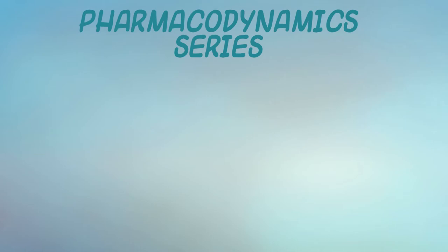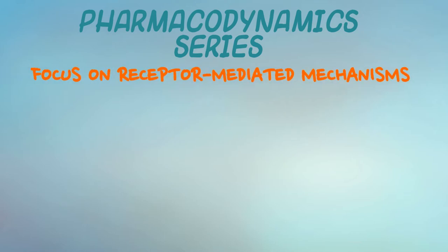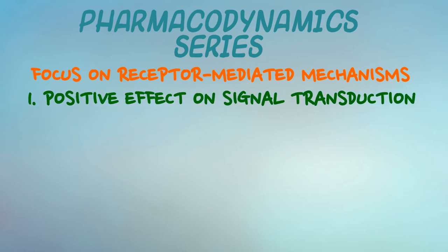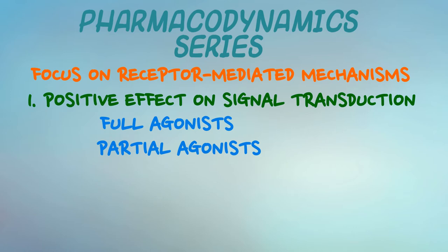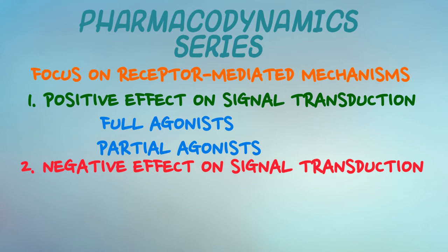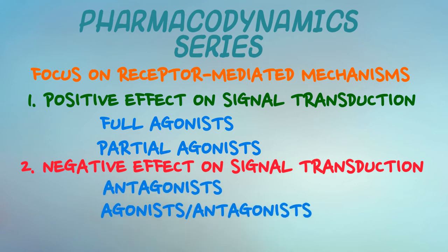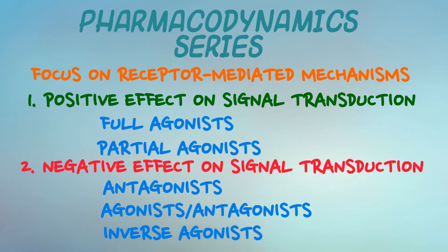Not all drugs exert their pharmacological actions via receptor-mediated mechanisms. However, many do, and we're going to focus on those that act via receptors connected to signal transduction mechanisms. In this series, we'll start by focusing, in this video, on drugs that drive a signaling pathway forward — full and partial agonists. In subsequent videos, we'll move to drugs that tend to act on receptors to diminish certain signaling pathways, that is, the antagonist, the agonist antagonist, and inverse agonist.